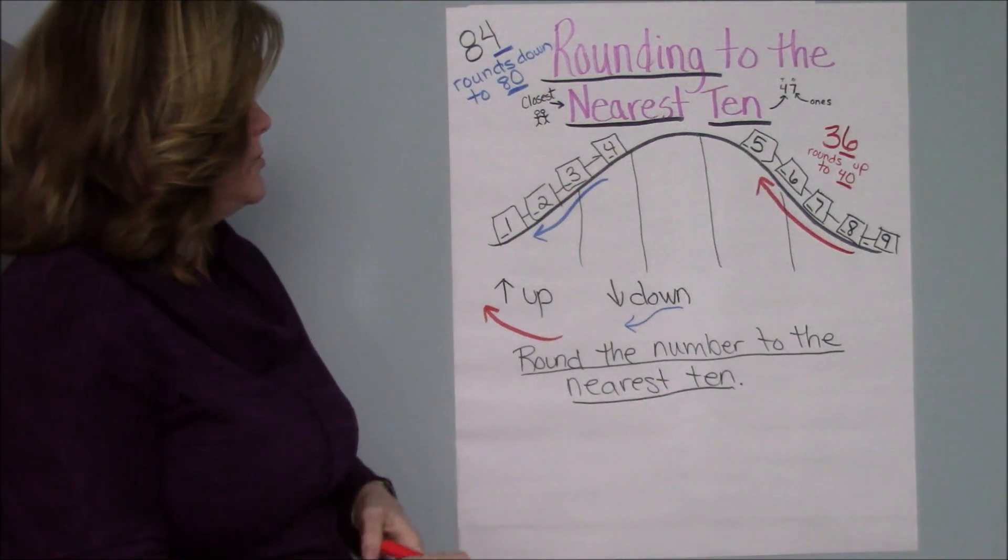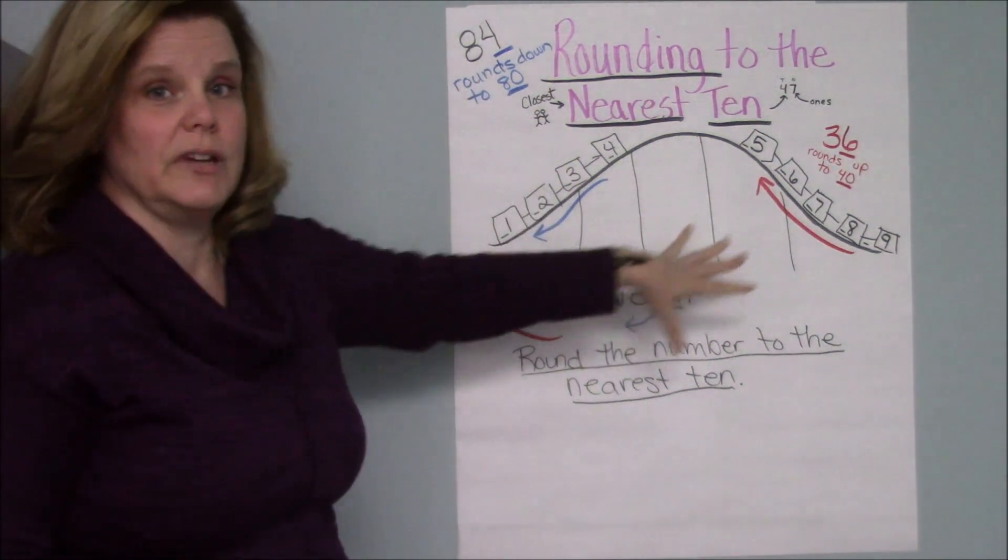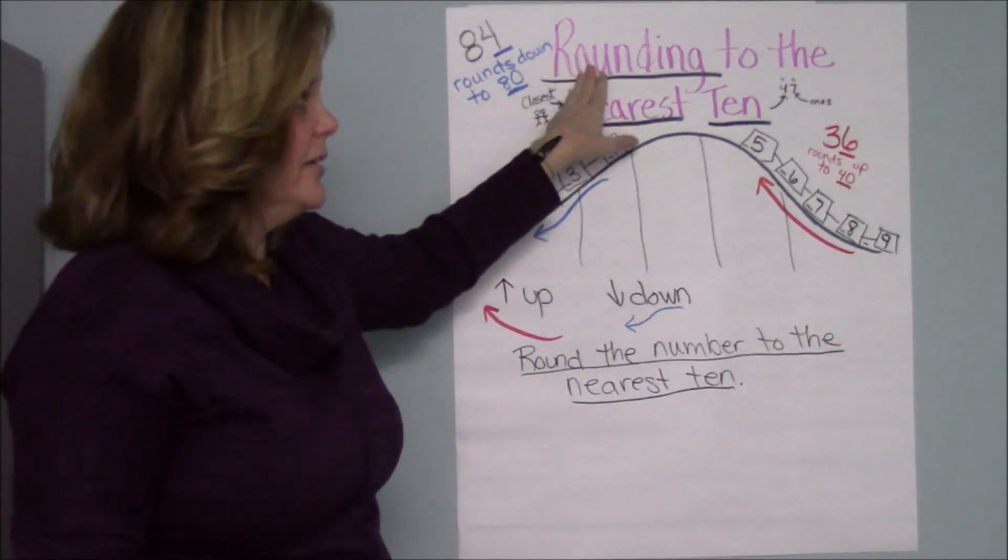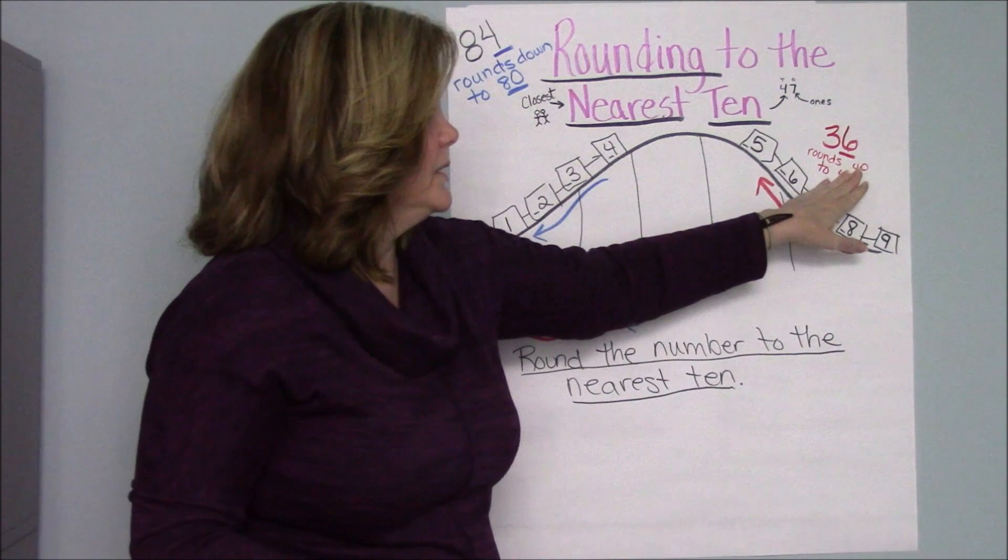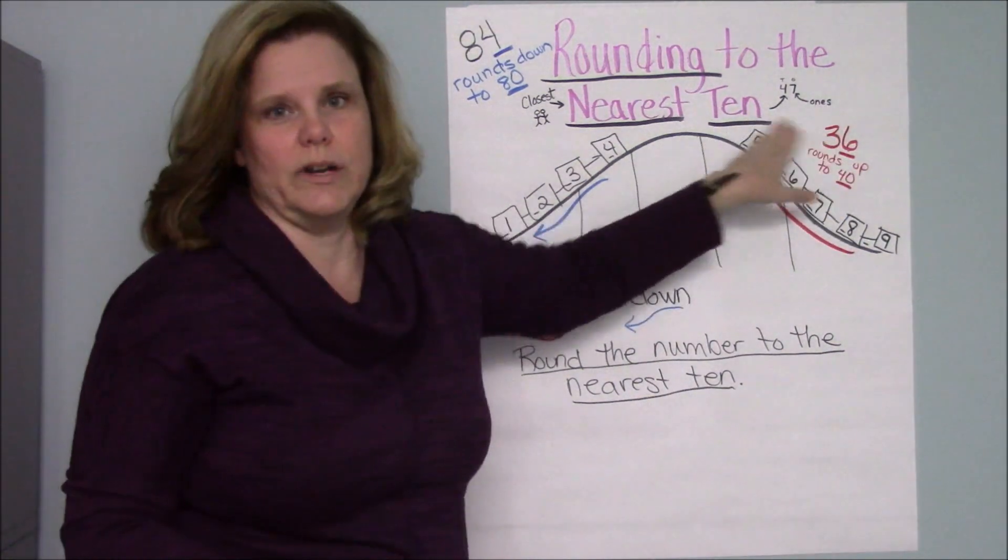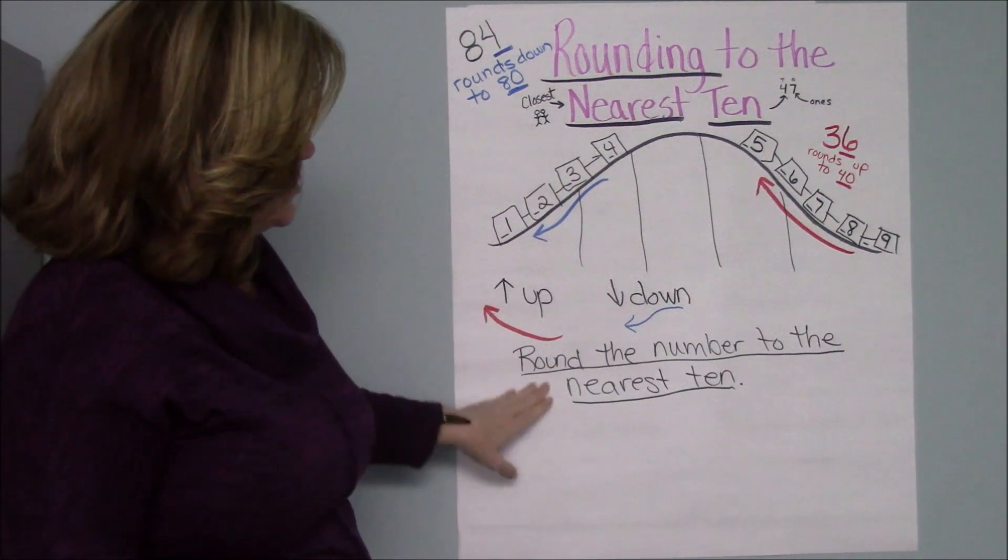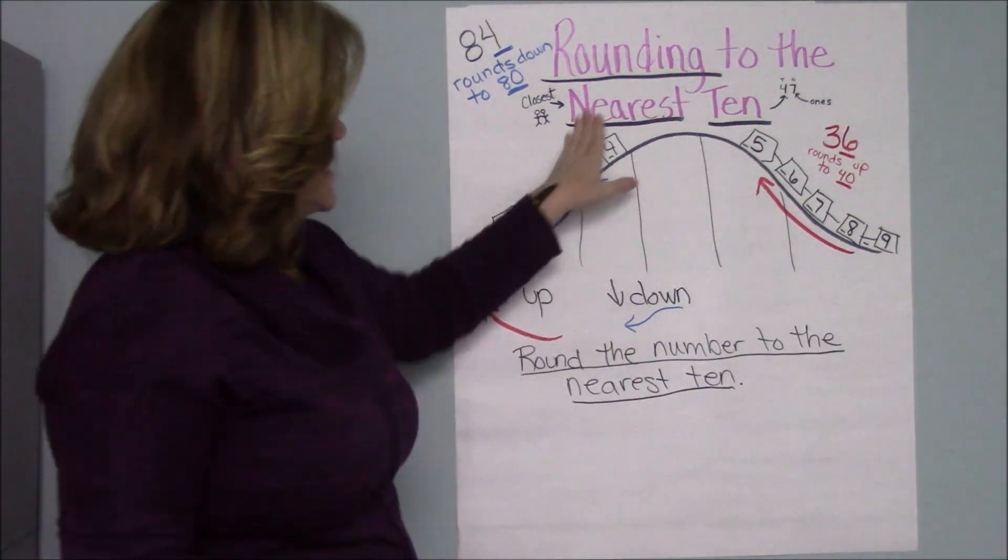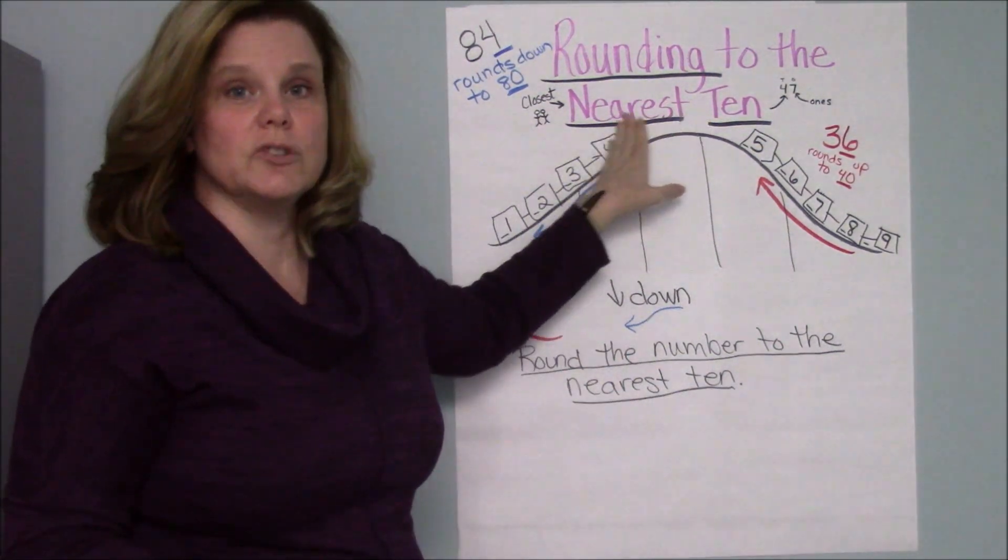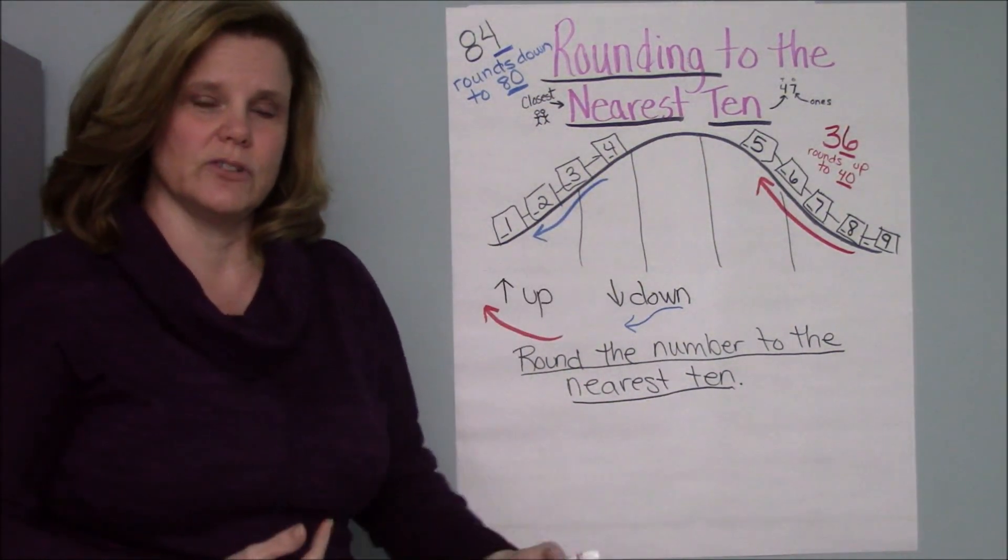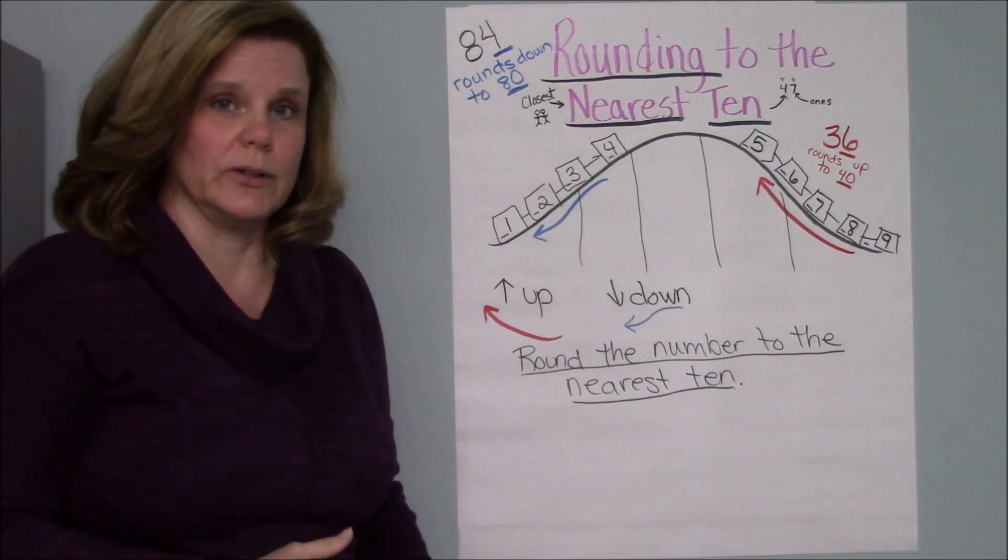I definitely want to hear you using the words that we have on this chart. I want to hear you say rounds down or rounds up. I want to hear you say tens and ones. Those are important words you'll have to use. I want you to be able to say nearest, which is the closest. So we're going to use all of those words in your conversation with your partner.